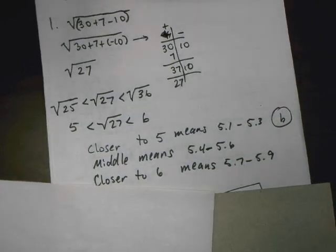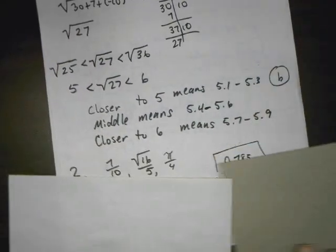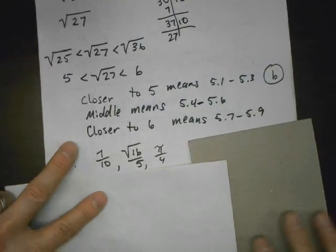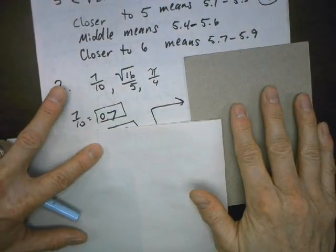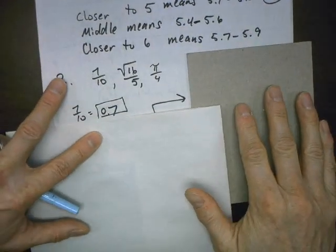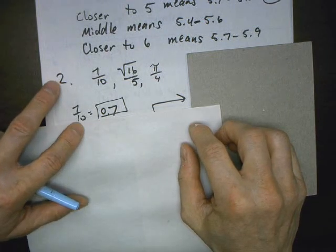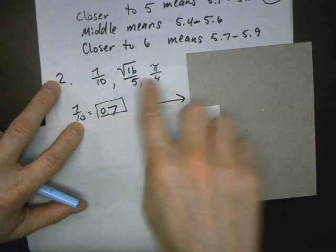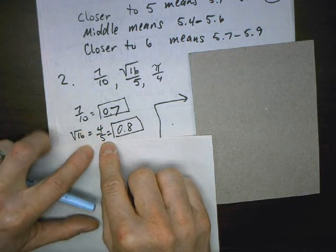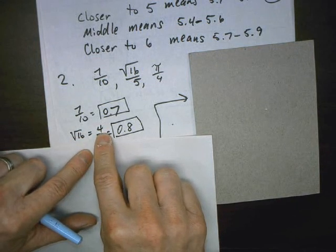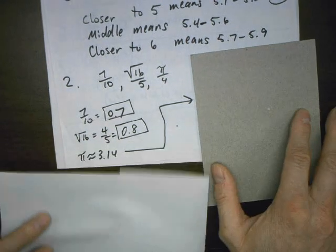Number 2 says: give the values for the numeric expressions. We have 7 over 10 — that's 7 tenths, so 0.7. For the square root of 16 over 5: the square root of 16 is 4, so 4 divided by 5. The divisor goes out and the dividend goes in. You should get 0.8.